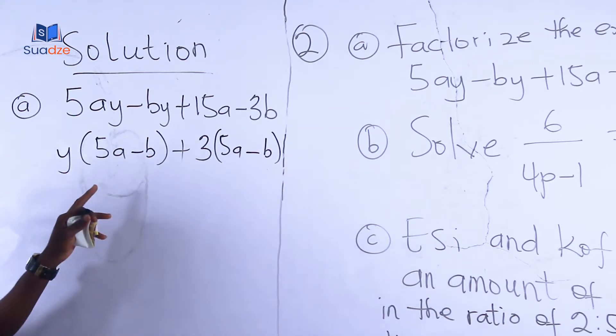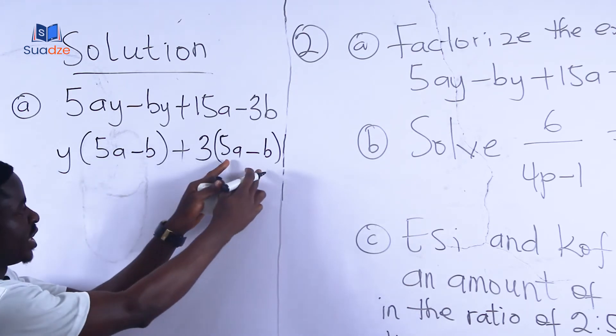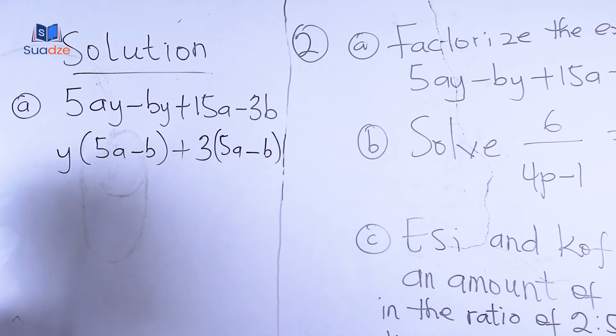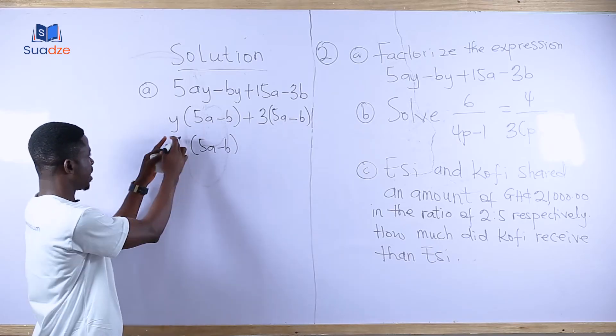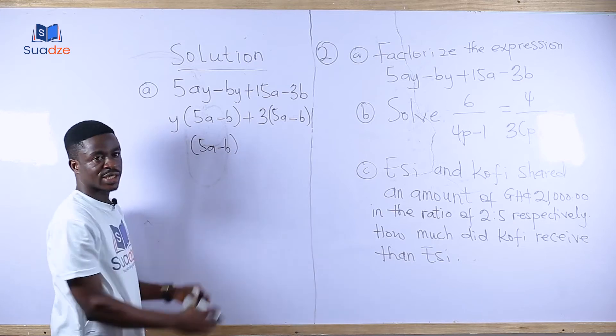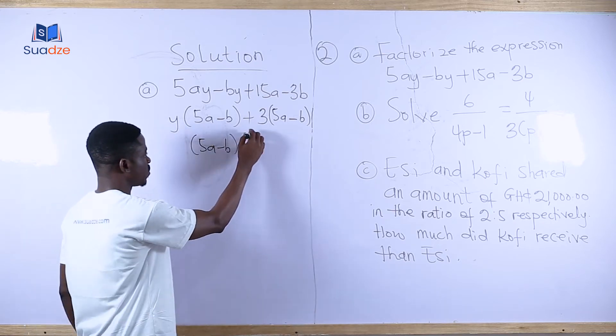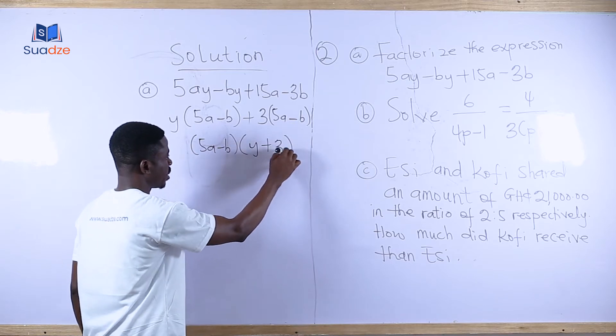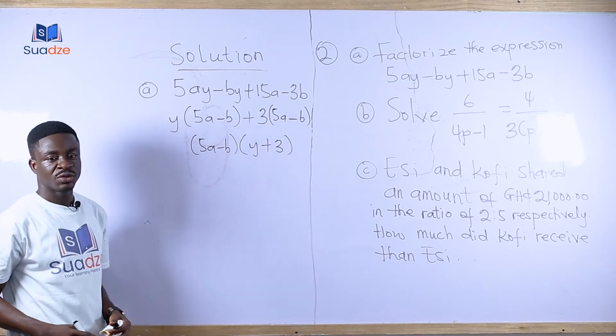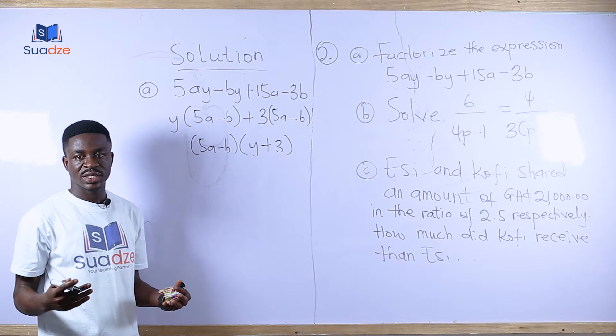So you realize that the expression within these brackets and the expression within these brackets are the same. So you pick one of them. This will give us (5a - b). And then you group the expression outside the brackets, which gives us (y + 3). So with this, we've been able to factorize the expression.